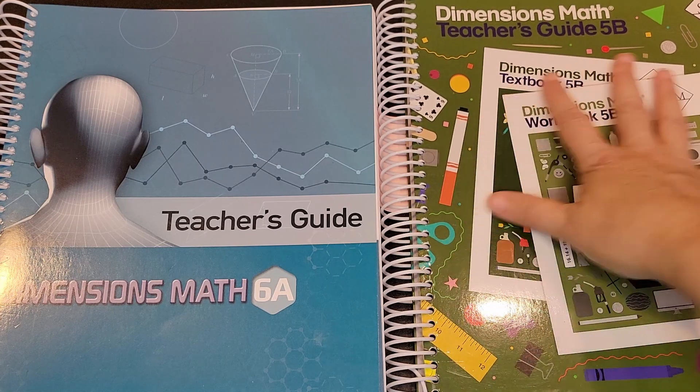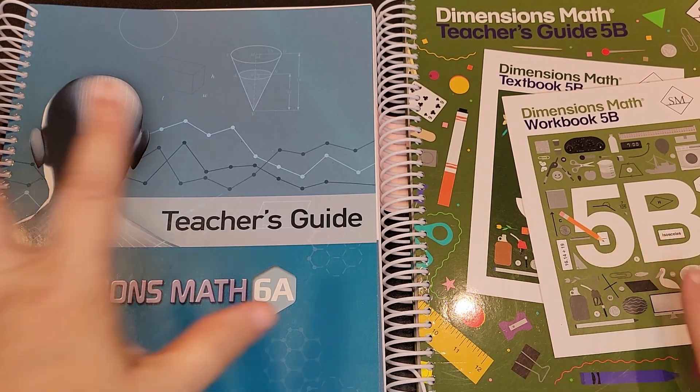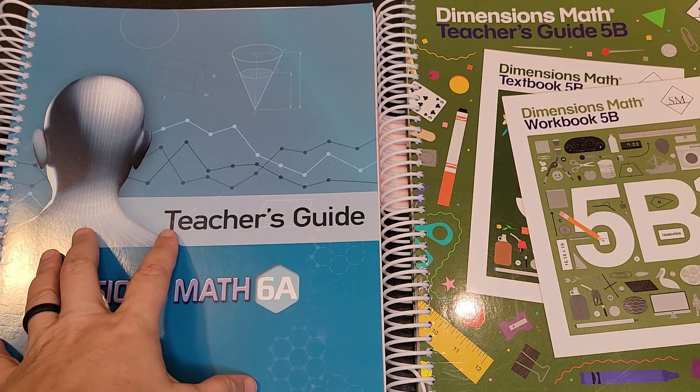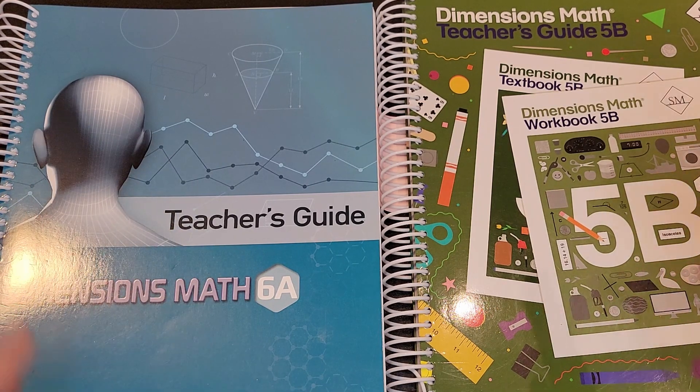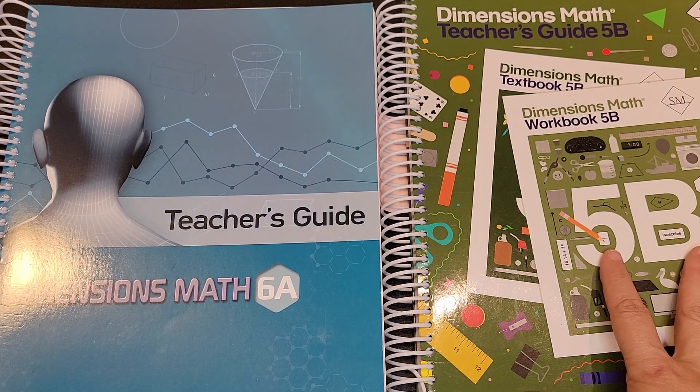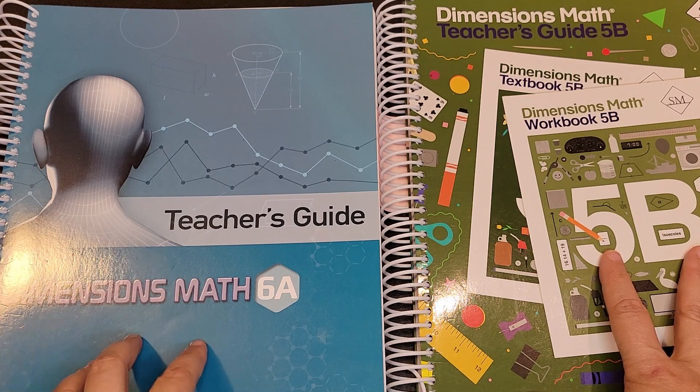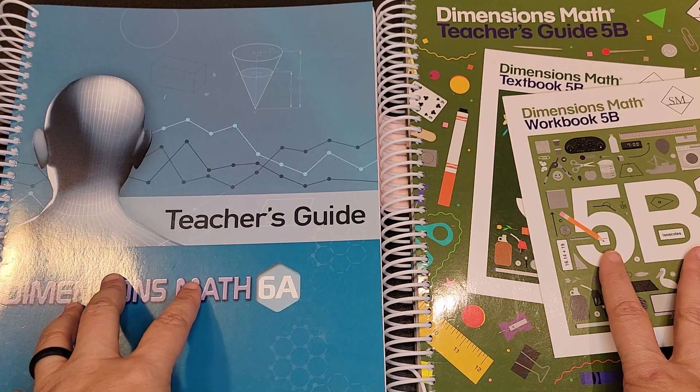Up through five they have the same basic cover, and then when you get into six it looks more like this, because up through five has been redone recently and then six, seven, and eight have not been redone.